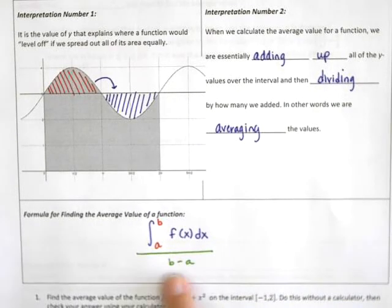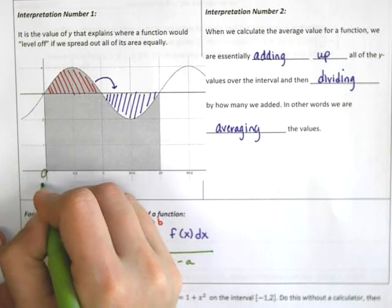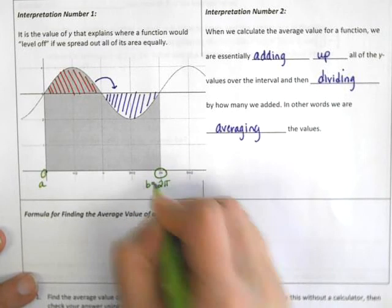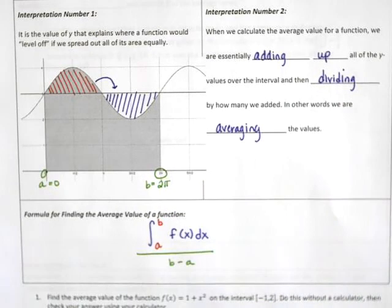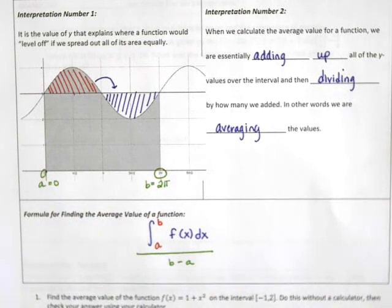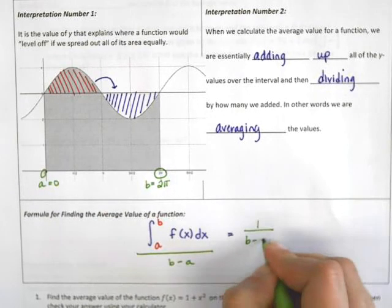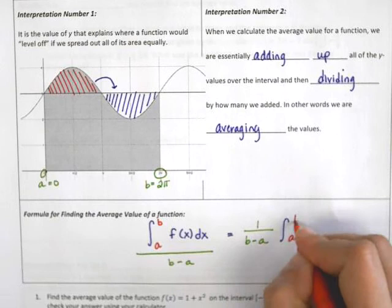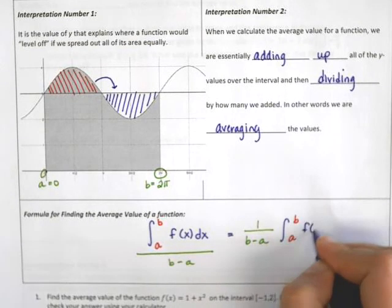b minus a is the size of the interval. So in this problem, a would have been 0 and b would have been 2π. What we would be doing is adding up all the y values, or all of the area between here and here, and then dividing by this distance to spread it out evenly. Another way you'll commonly see this written, because it looks a little more elegant, is 1 over b minus a times the integral from a to b of f(x).